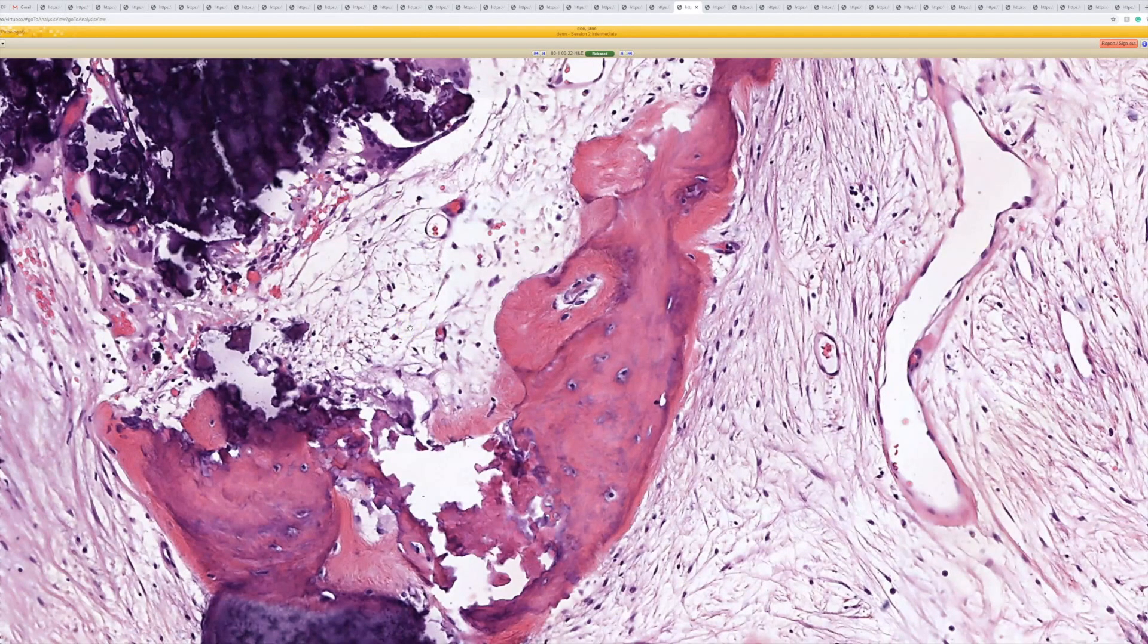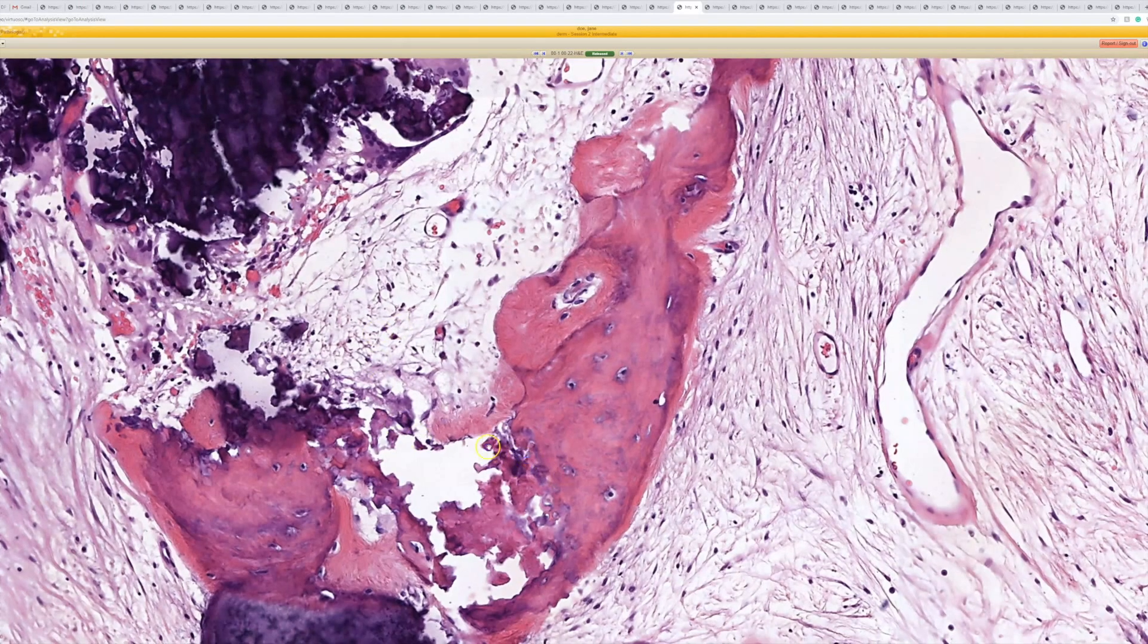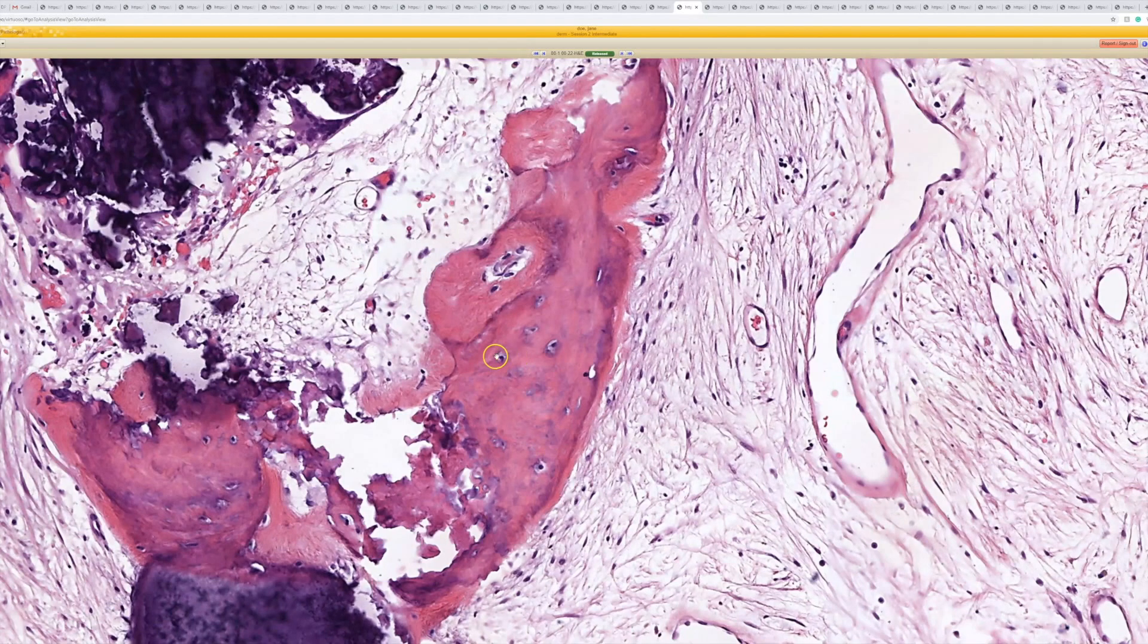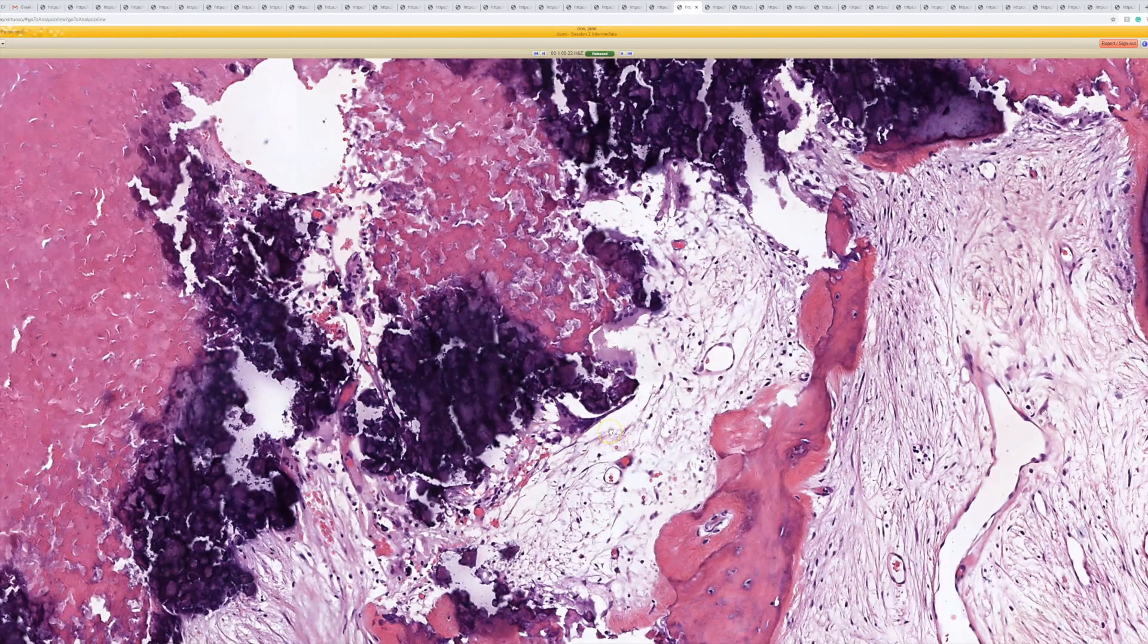Osteoid is type 1 collagen that gets calcium added on top of it and mineralized. But what you get is in actual bone, you'll have little lacunar spaces with osteocyte nuclei residing in them. So if you see the little space with a cell in the middle of it, that's how you tell it's actually bone, not just calcium.